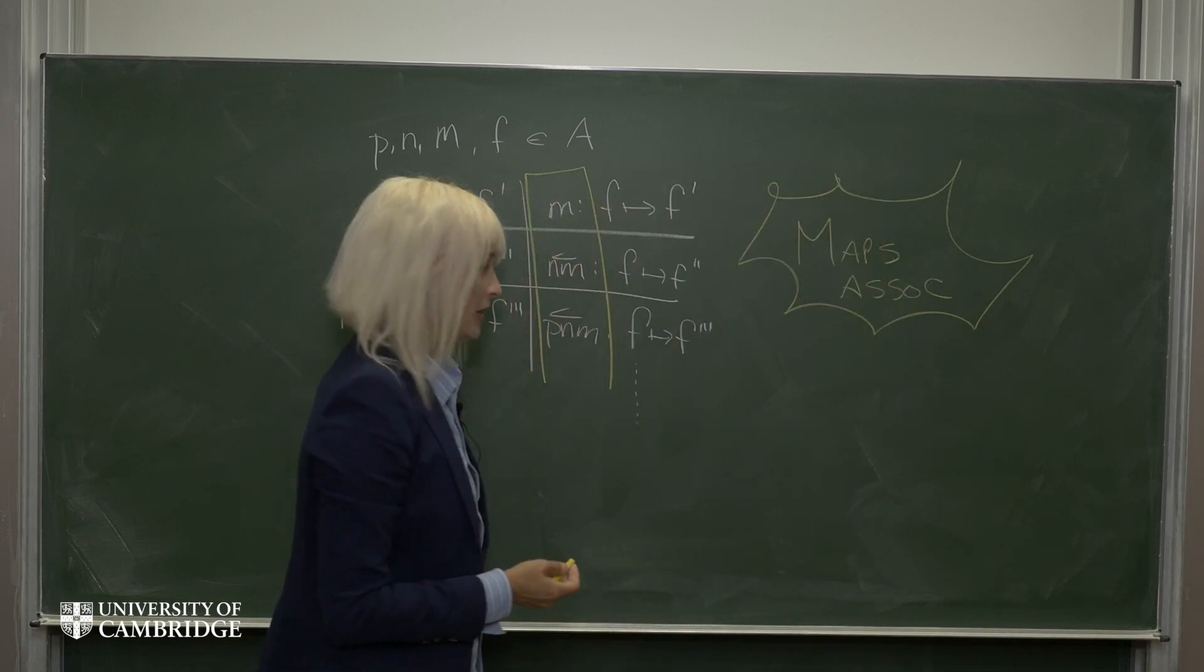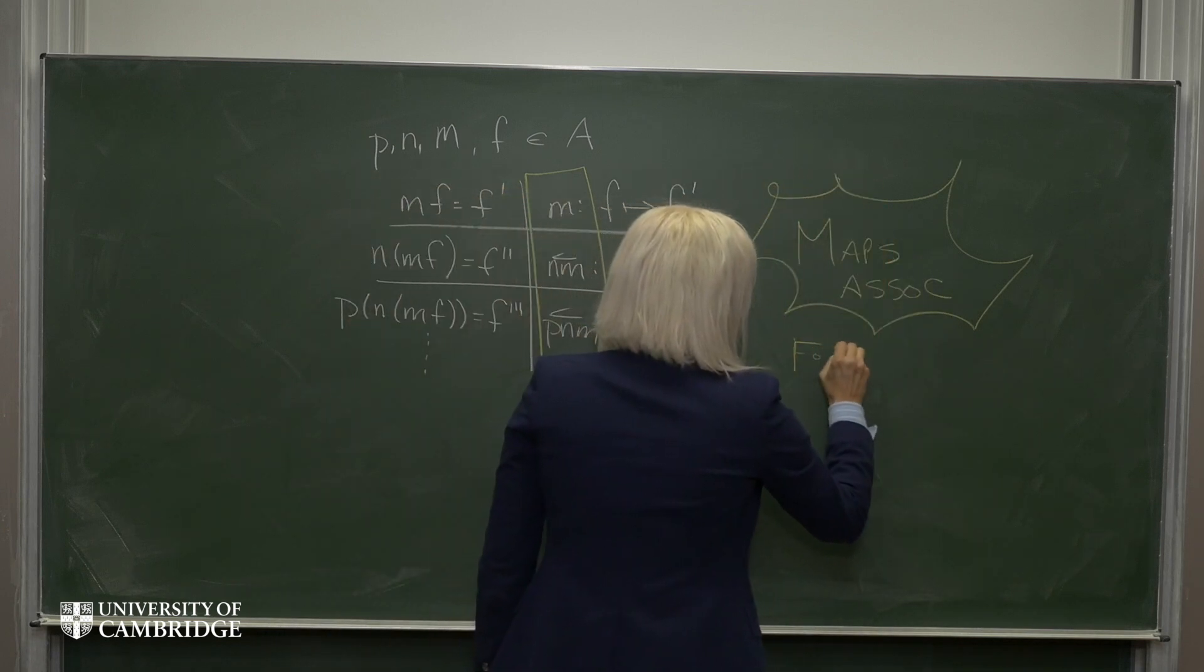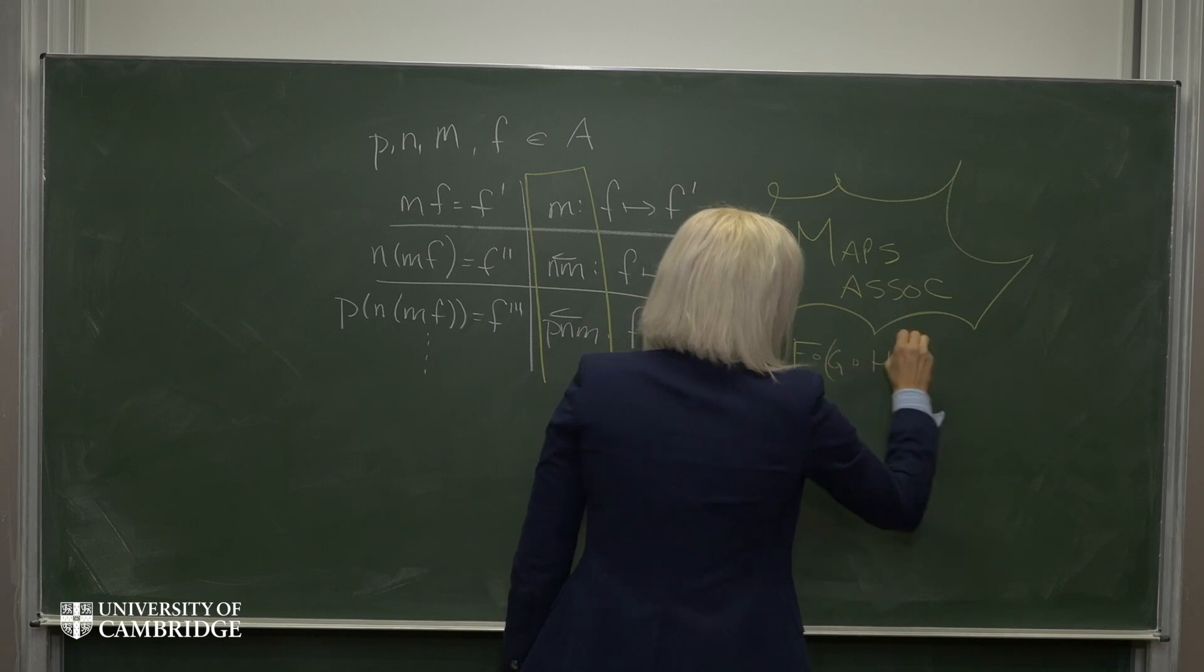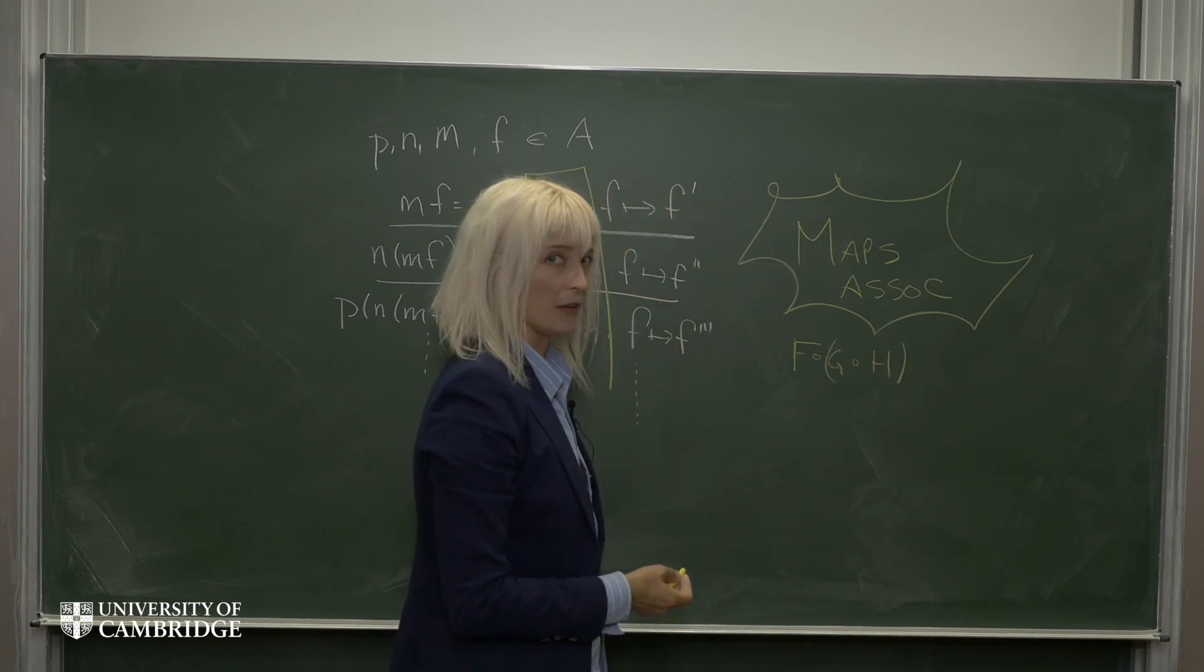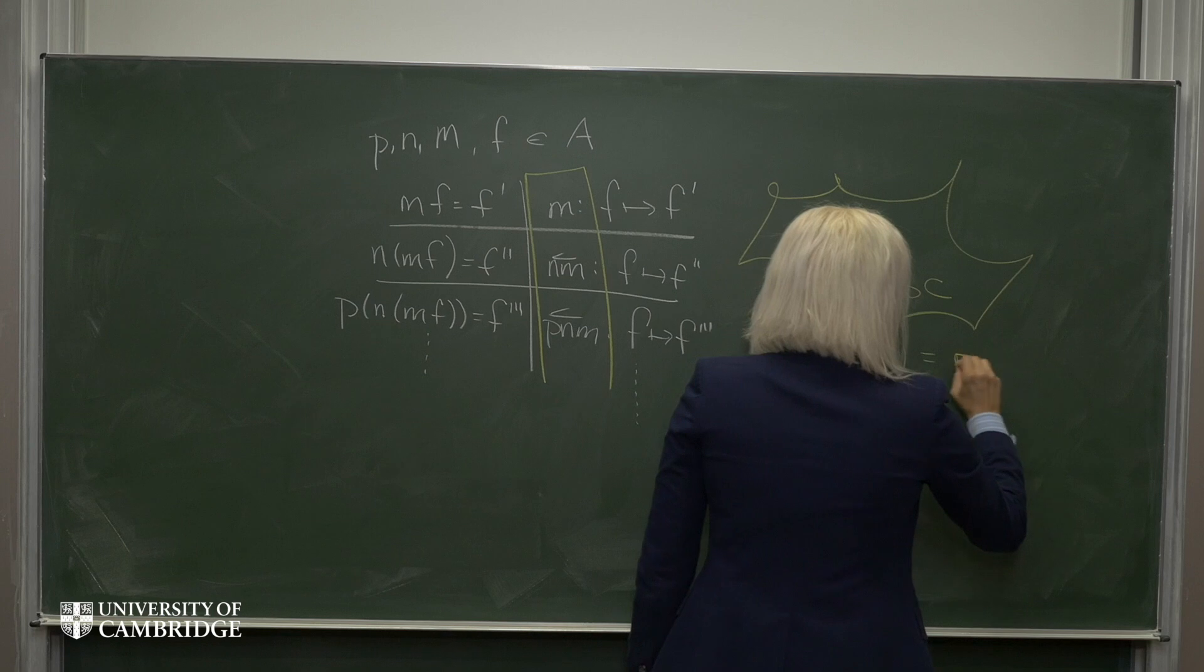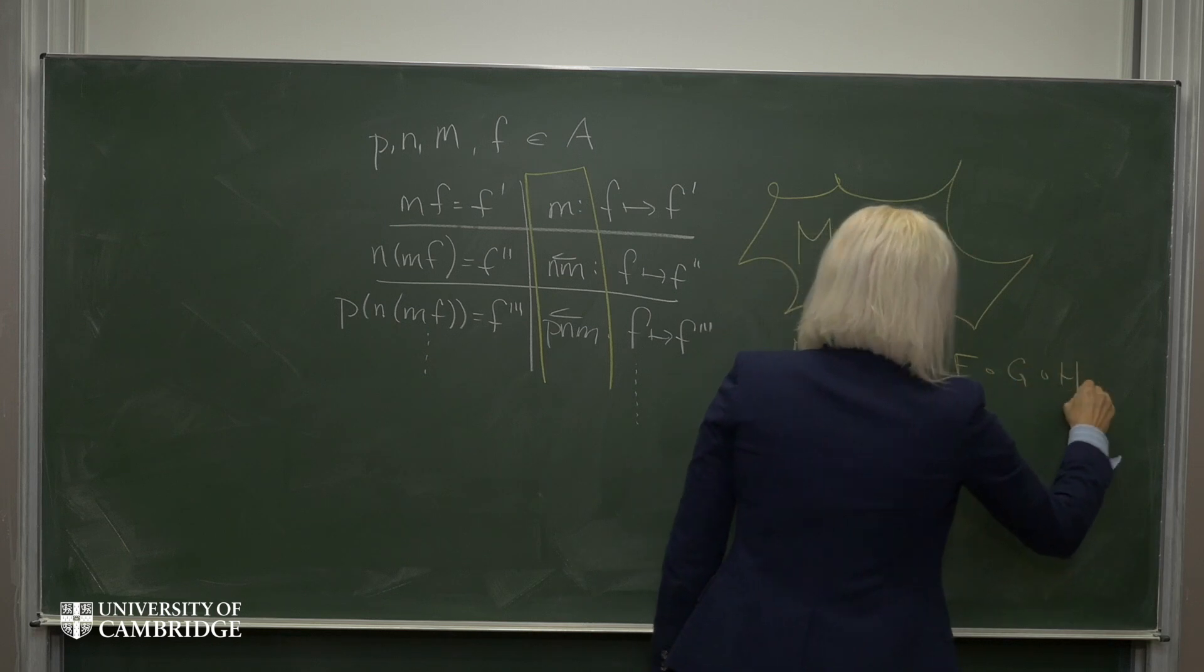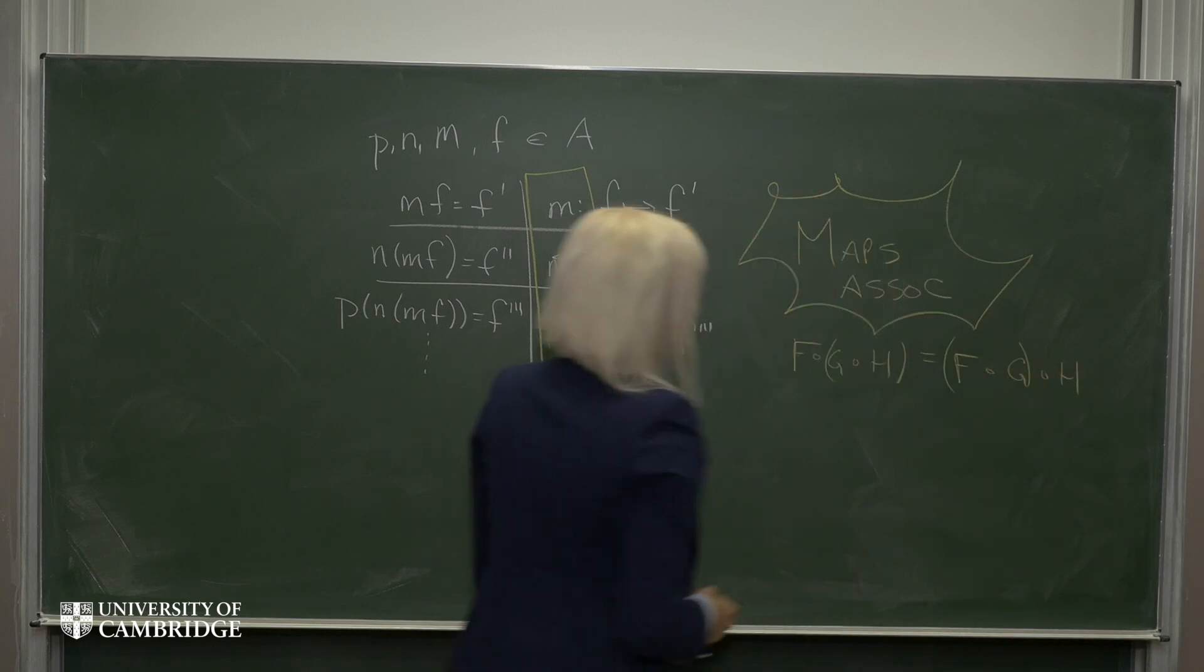So in other words, F of G of H, like this, is always equal to F of G of H, like this.